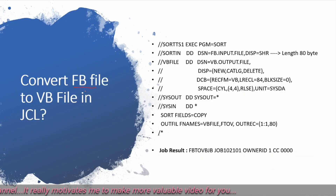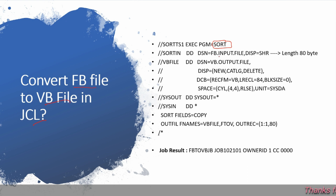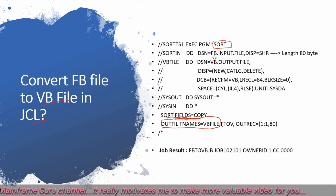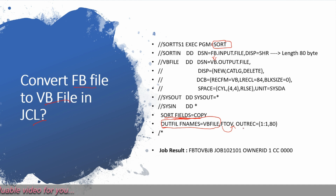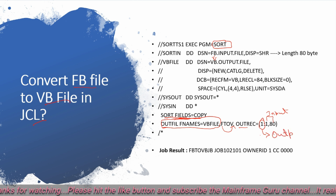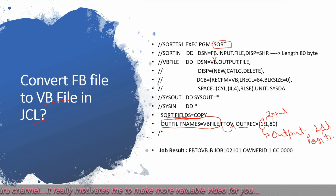Next question: how can you convert an FB file to a VB file in JCL? There is one utility — SORT utility — through which you can convert the FB input file to a VB output file. I have used SORT FIELDS equal to COPY, given the output file name, and am copying from fix to variable format — copying characters 1 to 80 from the input file to the output file, starting from the first position of the variable output file.